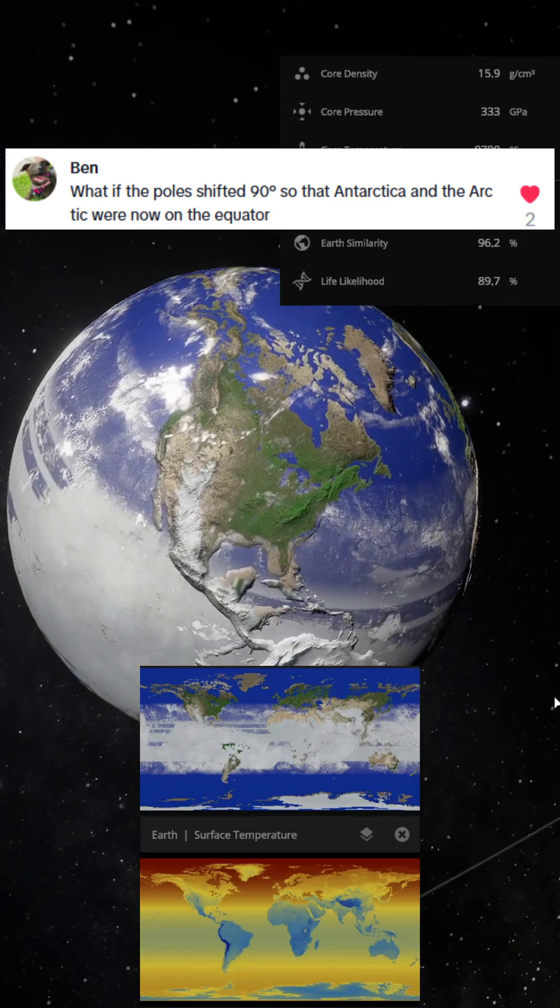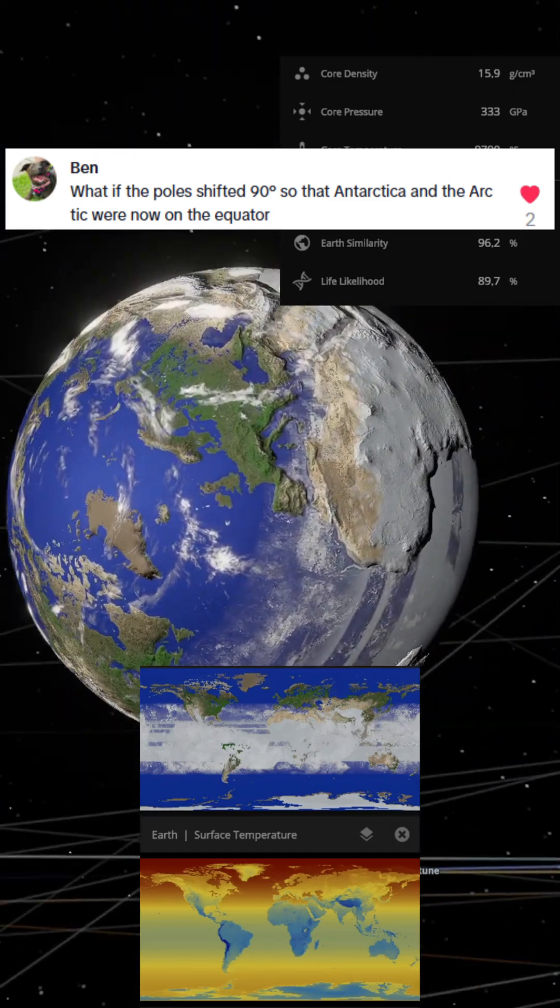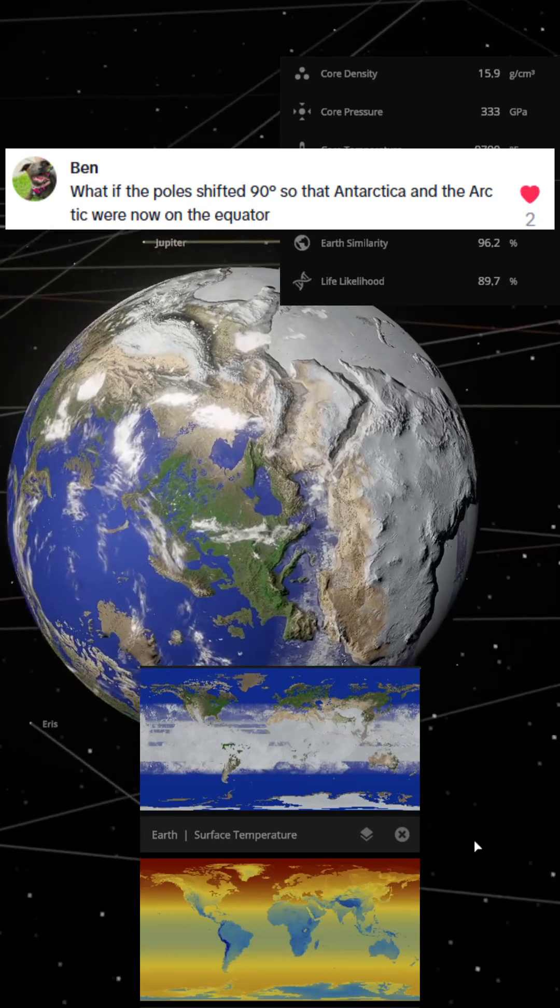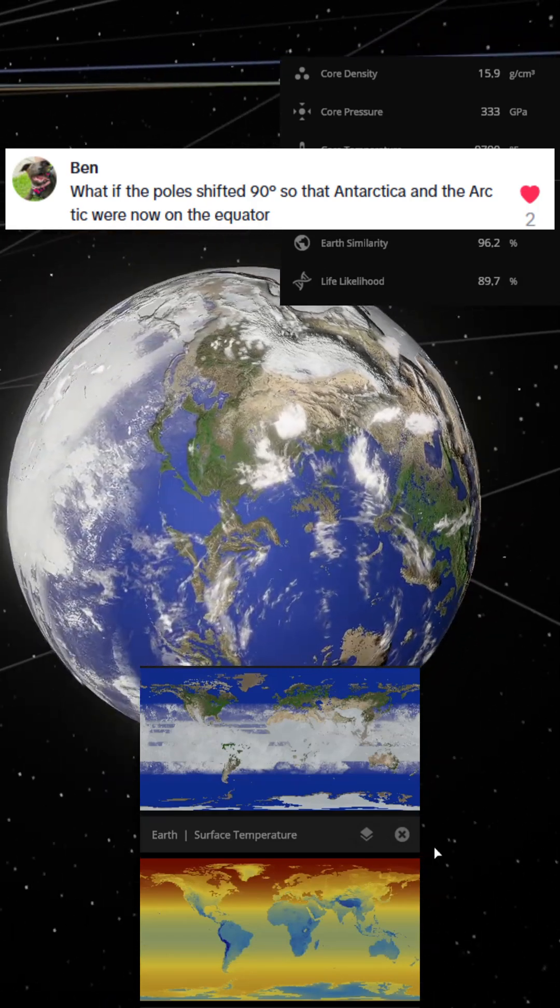A viewer proposed a question. If Earth experienced a 90-degree axial shift, moving Antarctica and the North Pole to the equator, what would happen?